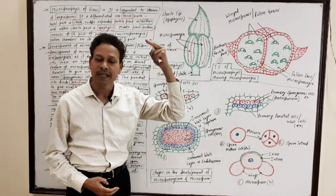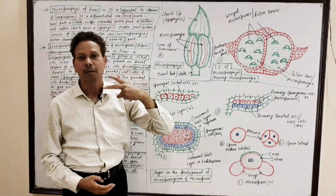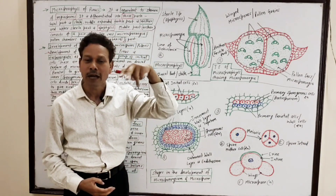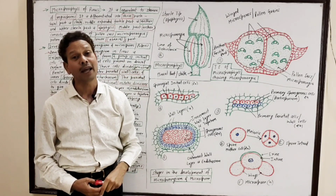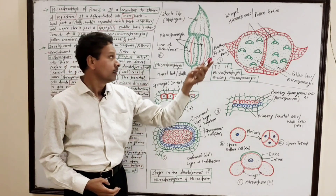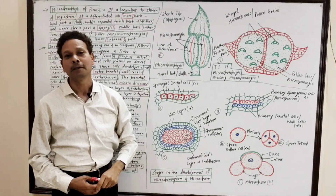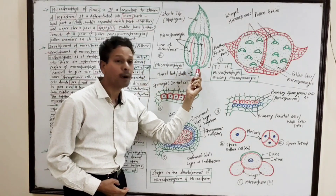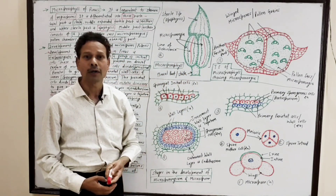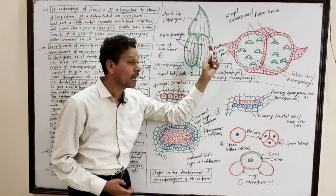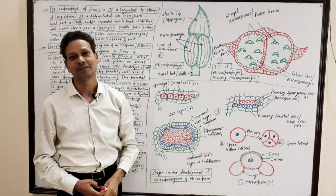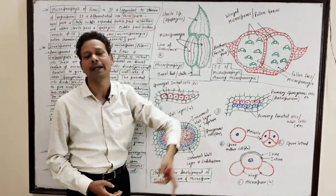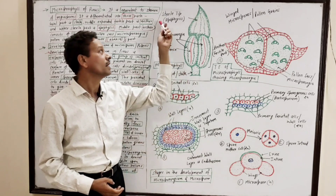In the case of a stamen, two parts are present: one is a stalk-like structure called the filament, and the upper fertile part, which is bi-lobed, called the anther. But here, in the case of microsporophyll, three parts are present: the basal lower part is the stalk, the middle expanded fertile part is the anther, and the upper sterile part is the apophysis.